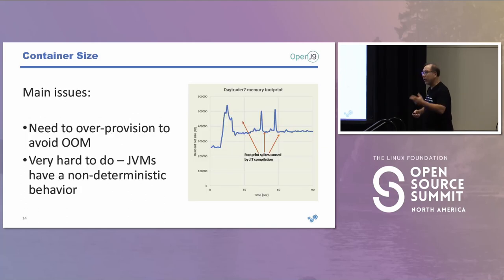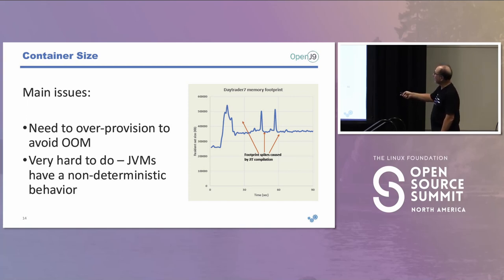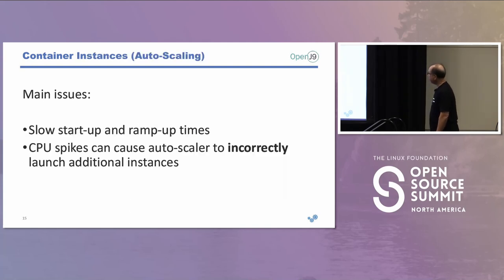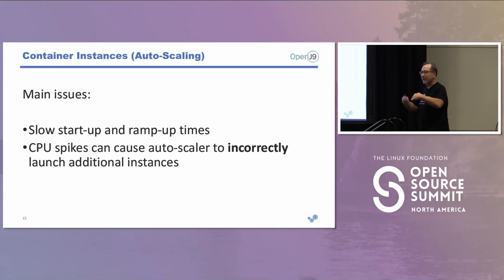The problem is we will always over-provision. We run tests, determine the container needs to be sized to handle these spikes, but 90% of the time your code runs well below those levels — so you're wasting space. Plus JVMs are non-deterministic: you run the same code twice and you'll get different spikes at different levels. So you're always going to over-provision.